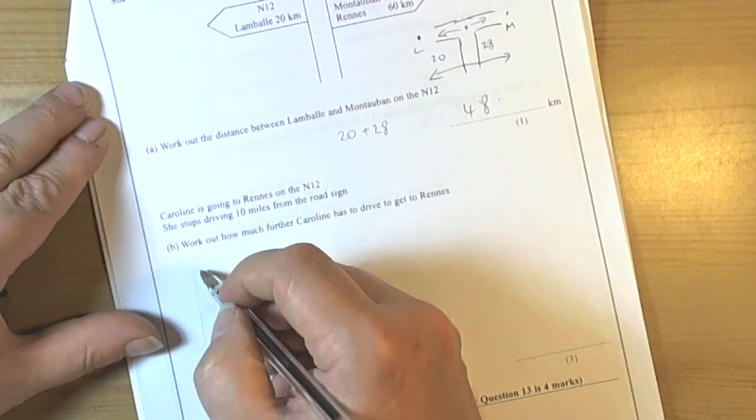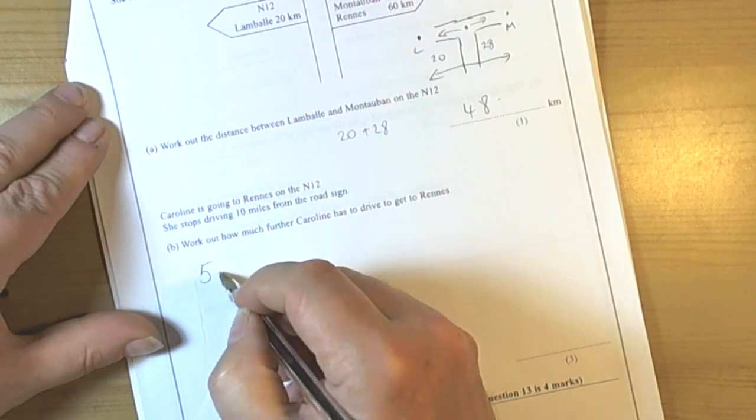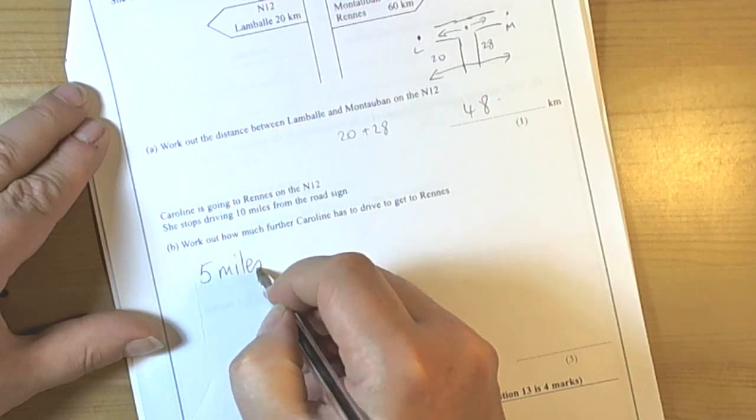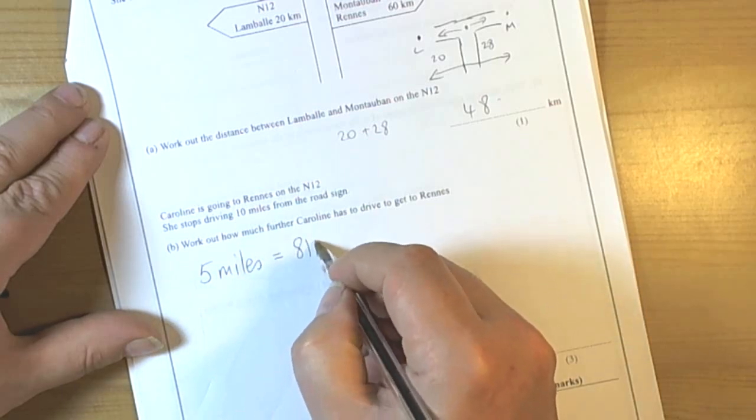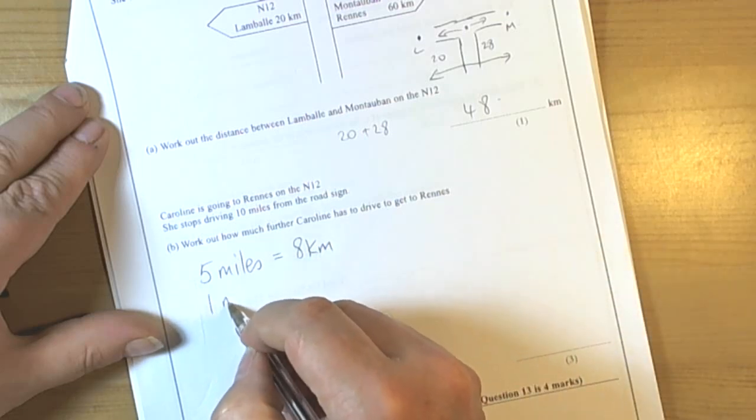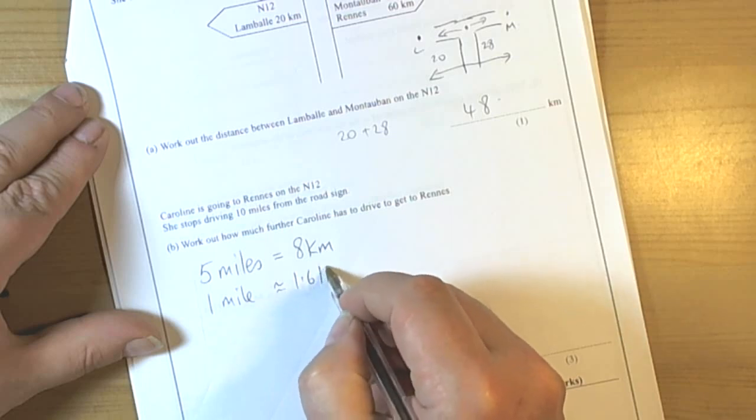So we need to remember some facts. They don't give us these, we've got to learn them. So facts about miles and kilometres: we either remember that 5 miles is equal to 8 kilometres, or we say that 1 mile is approximately 1.6 kilometres.